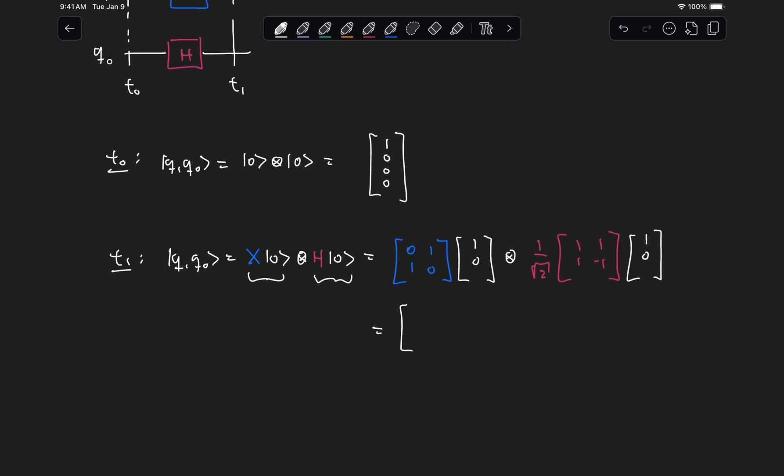And this, as we know, will give us state 1, then tensored with, if we multiply the Hadamard gate with state 0, we know we get state plus, which is 1 over root 2, 1, 1.